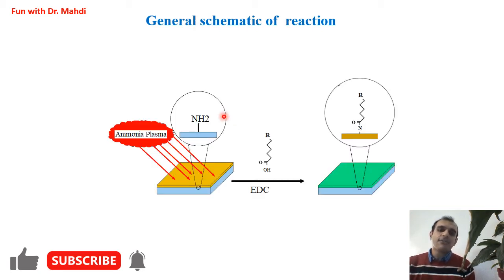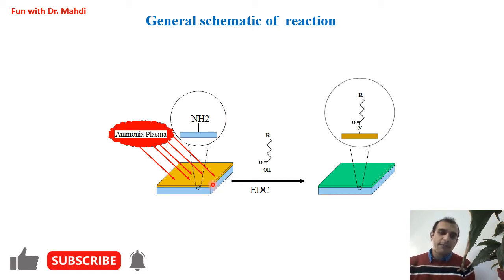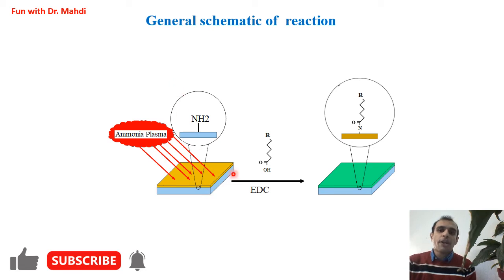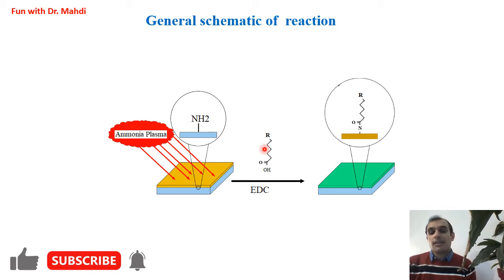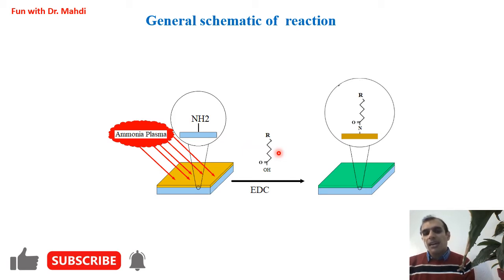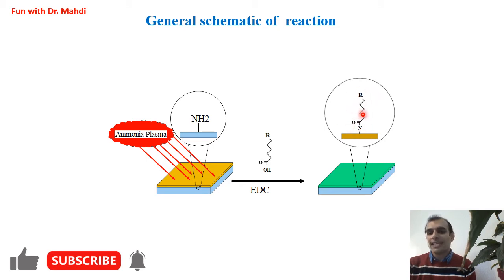Here, in this slide, you can see a general schematic for doing this reaction. Again, we need to cover the surface with amine. For this purpose, we need to use ammonia plasma, and after two minutes, we will have a lot of amine on the surface. In the next step, we need to dissolve our compound in the solvent and immerse the substrate in this solution and leave it for one hour. After washing, we will have our compound on the surface.